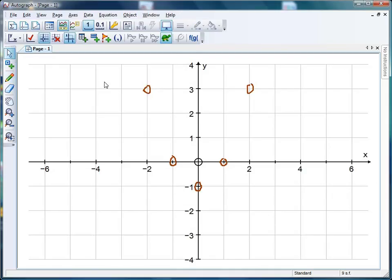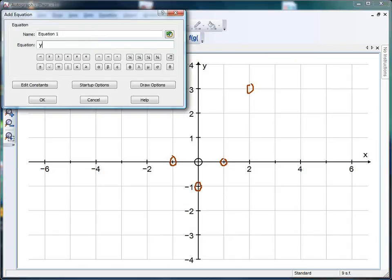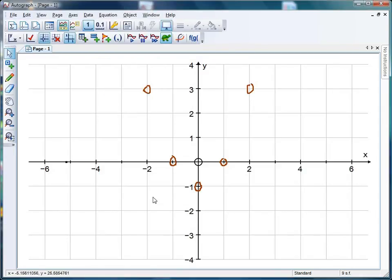Then get Autograph to check it. Enter equation, you can either hit enter or click on the button there. y equals x squared - little tip, if you want to do x squared just hit x twice - x squared minus 1, click OK, cross your fingers.